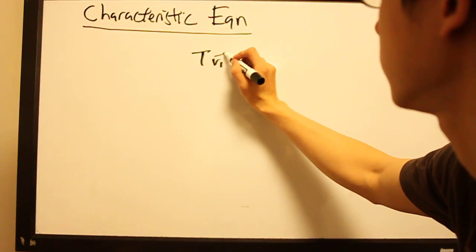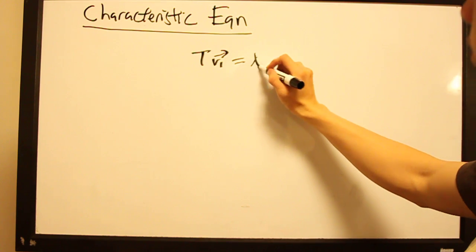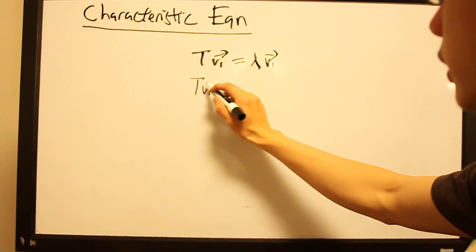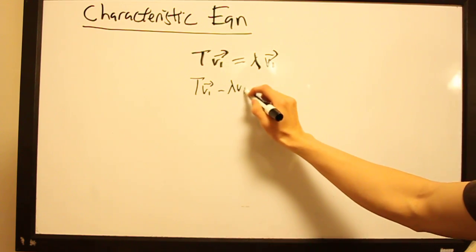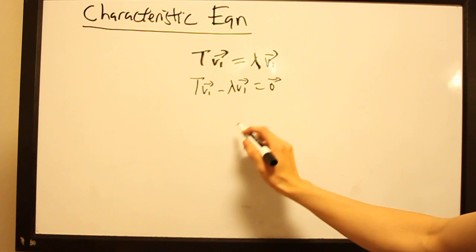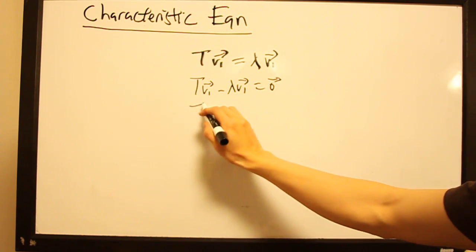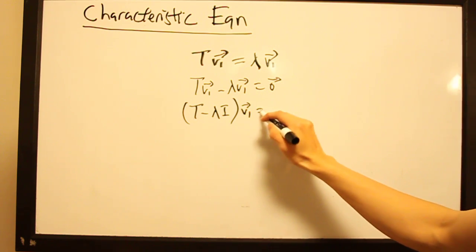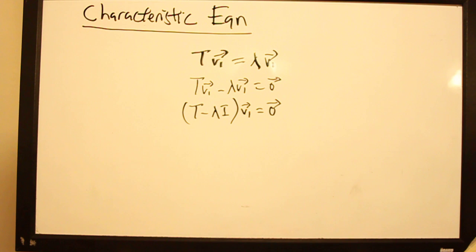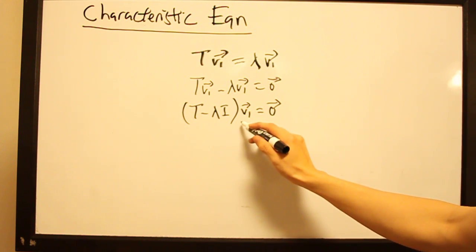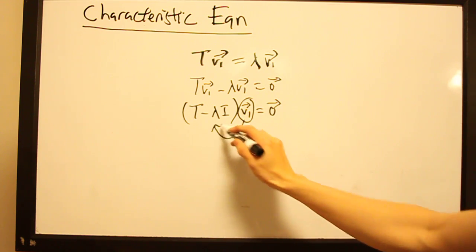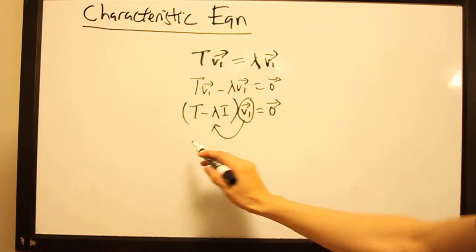If I have eigenvector v1 of t, this means that t of v1 is some scalar times v1. If we rearrange terms, we can see that t of v1 minus lambda v1 is the zero vector. If we factor out v1, we get t minus lambda identity of v1 equals the zero vector. Recalling the definition of the null space, v1 is in the null space of t minus lambda i.